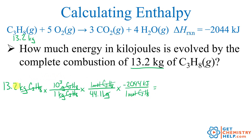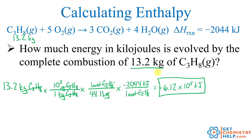Putting it all in the calculator: 13.2 times 10³ divided by 44.11 times 2044. With three significant digits, the answer is 6.12 times 10⁵ kilojoules — the amount of energy released when burning 13.2 kilograms of propane. The negative sign is a convention indicating the energy is released by the reaction, not absorbed; in other words, this reaction is exothermic.